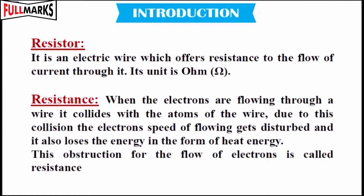Resistor: It is an electric wire which offers resistance to the flow of current through it. Its unit is Ohm. When electrons are flowing through a wire, they collide with the atoms of the wire. Due to this collision, the electron speed gets disturbed and energy is lost in the form of heat energy. This obstruction to the flow of electrons is called resistance.